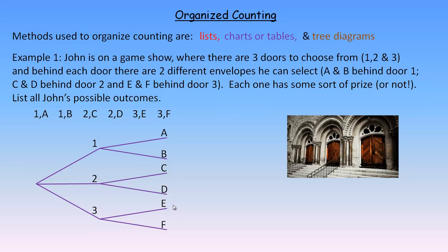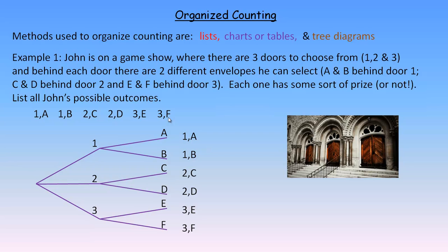When you draw a tree diagram, you get the list of all possibilities by listing them at the end. So we would go 1A, 1B, 2C, 2D, 3E, and 3F. That's the same list as before. The nice thing about the tree diagram is it makes it more organized, so you're more sure you're going to get all of the outcomes.